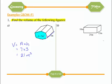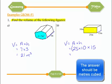Next we have a rectangular prism. The cross-sectional area can be viewed from multiple sides since it's a regular shape. Volume is A times H, where the area of the rectangle is length times width — 25 times 10 — and the height is 15. So the area is 250, and the volume is 250 times 15, which is 3,750 centimetres cubed.